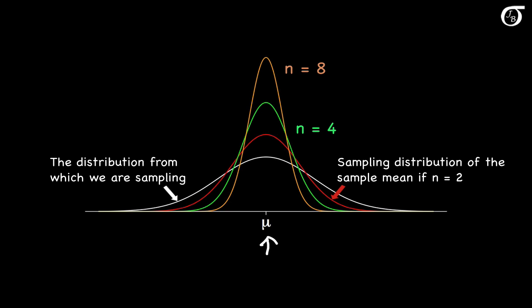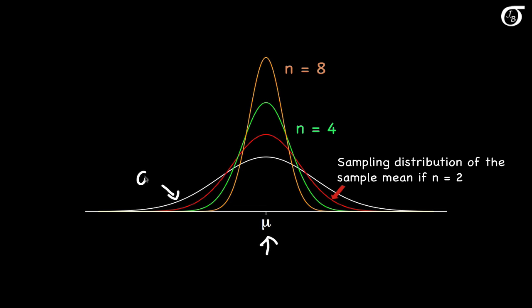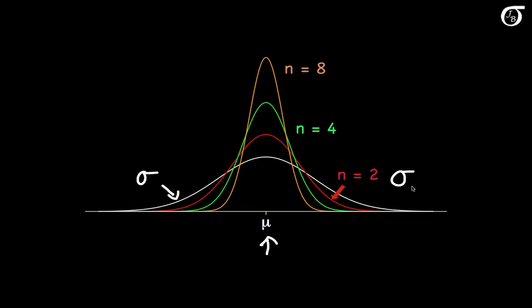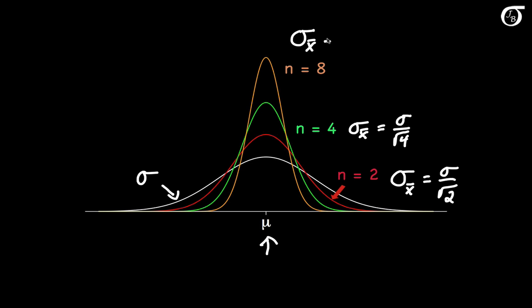In all of these situations, the mean of the sampling distribution is always equal to the mean of the population from which we are sampling, but the standard deviation is smaller. The standard deviation of the population, represented by the white curve, is sigma. When the sample size is 2, the standard deviation of the sampling distribution of X bar is sigma over the square root of 2. When the sample size is 4, it is sigma over the square root of 4, and when the sample size is 8, the standard deviation is sigma over the square root of 8.